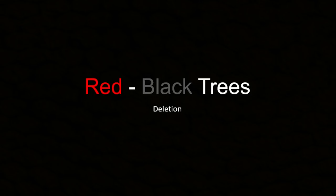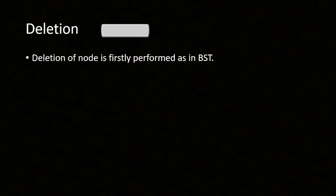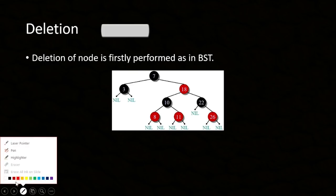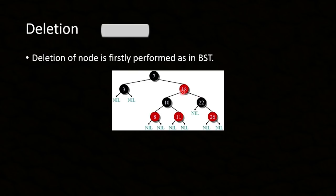Deletion is first performed as in a BST. That means if we try to delete any node from this tree, we will have to replace it with either the rightmost of the left subtree or the leftmost of the right subtree. So if I want to delete this node, I will need to replace it with either the rightmost of the left subtree or the leftmost of the right subtree, which is 8 here. Simple enough, just like in BST.